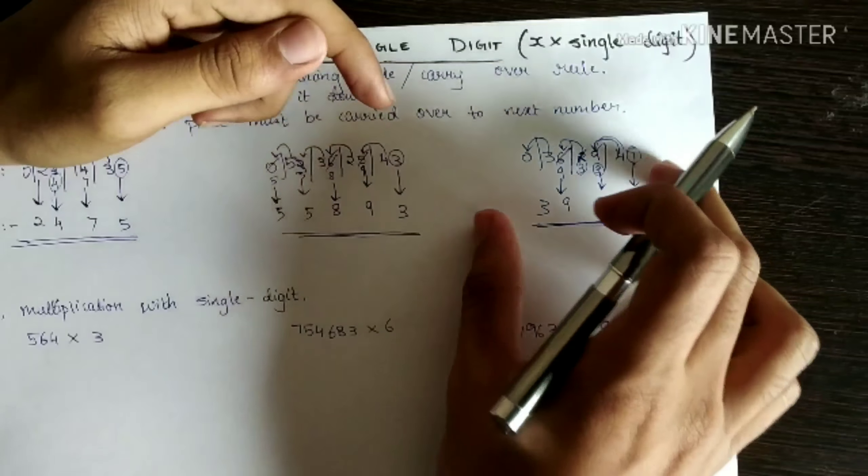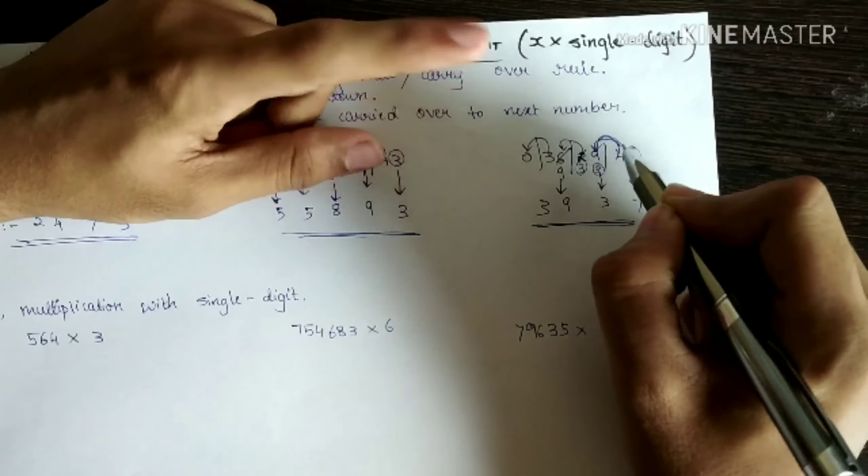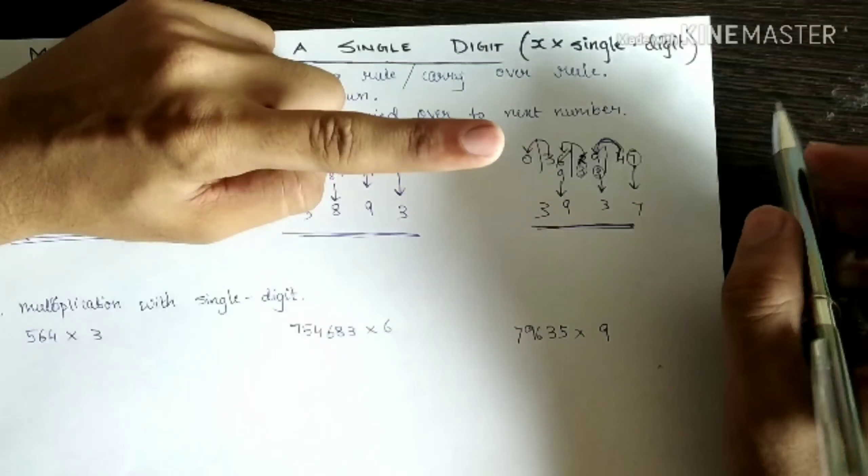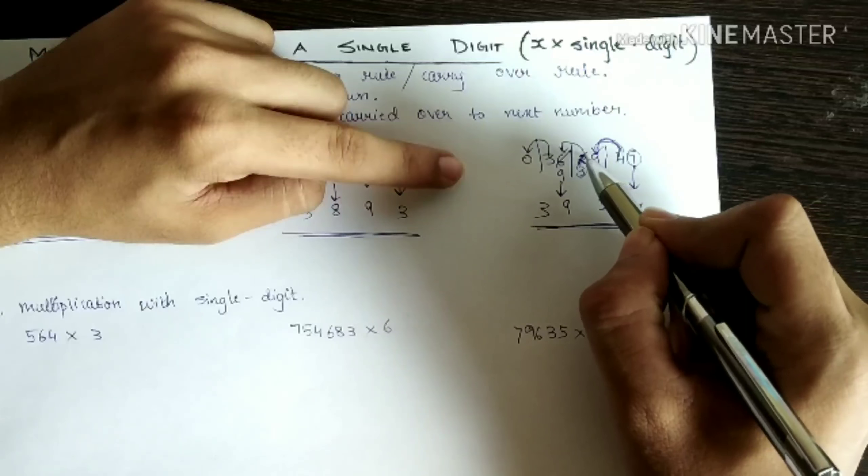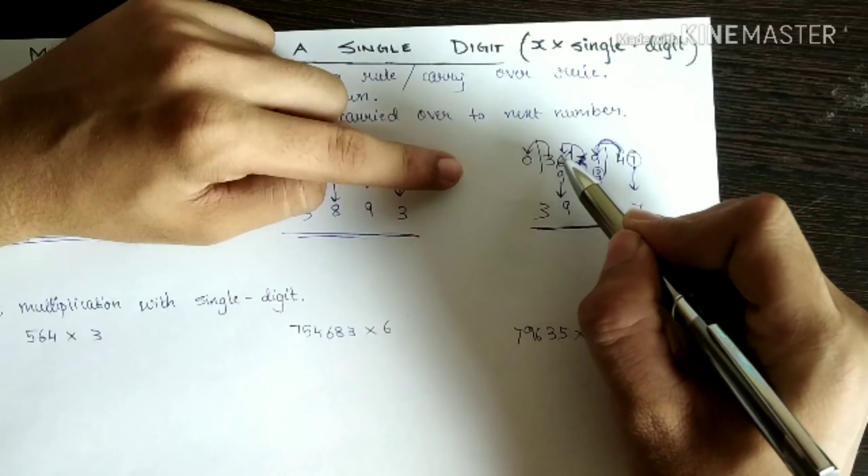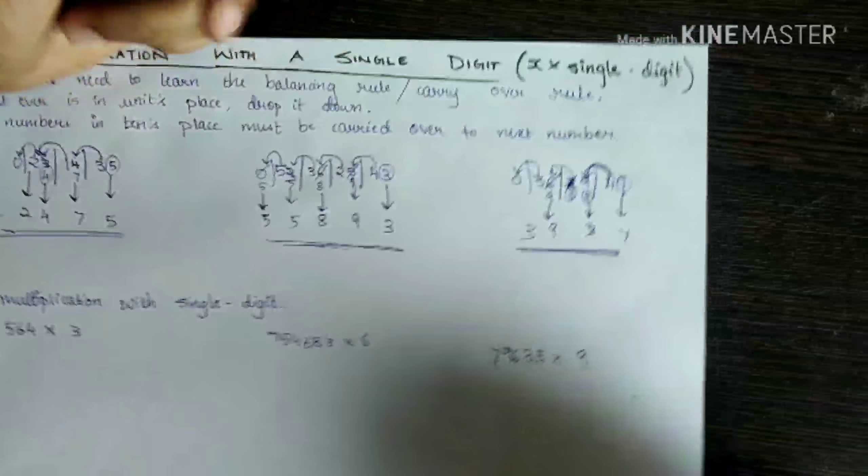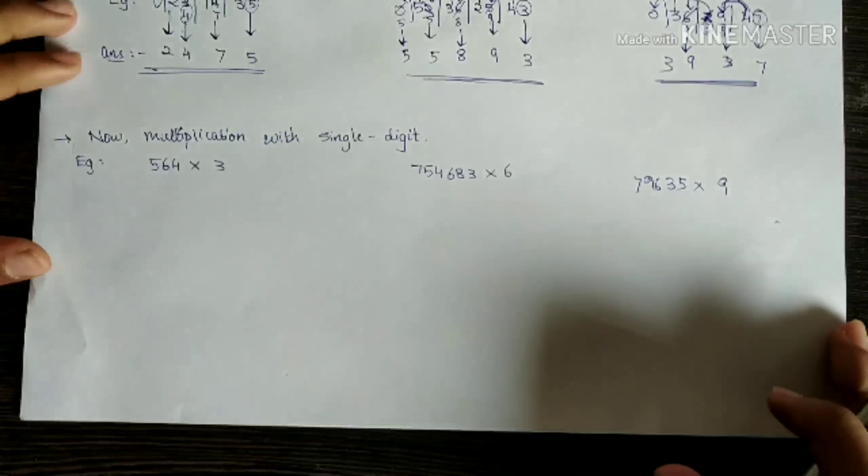Watch this part again so that you are comfortable with it. The only part was nine plus four is thirteen. Take one carryover as you do in normal addition, no difference. Put three down. And one you are supposed to add it to this number. And this is in tens place. So you are supposed to add it to the units place of next number. That is the method. So hope you are comfortable with this method.